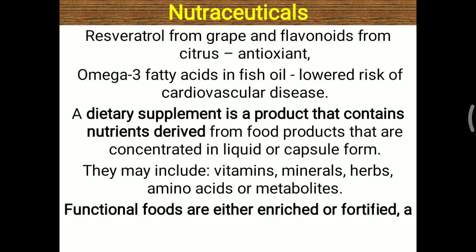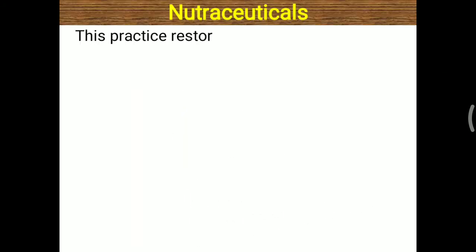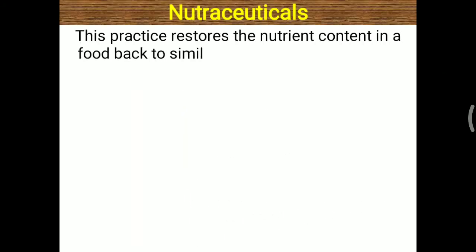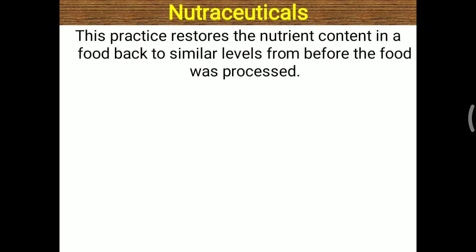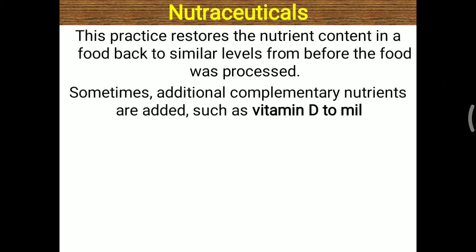Functional foods are either enriched or fortified, and the process of enriching that food is called nutrification. Apart from separating a particular nutrient, sometimes that nutrient is externally added back to the food. This practice restores the nutrient content in a food back to similar levels from before the food was processed. For example, vitamin D is added to milk to avoid vitamin D deficiency.